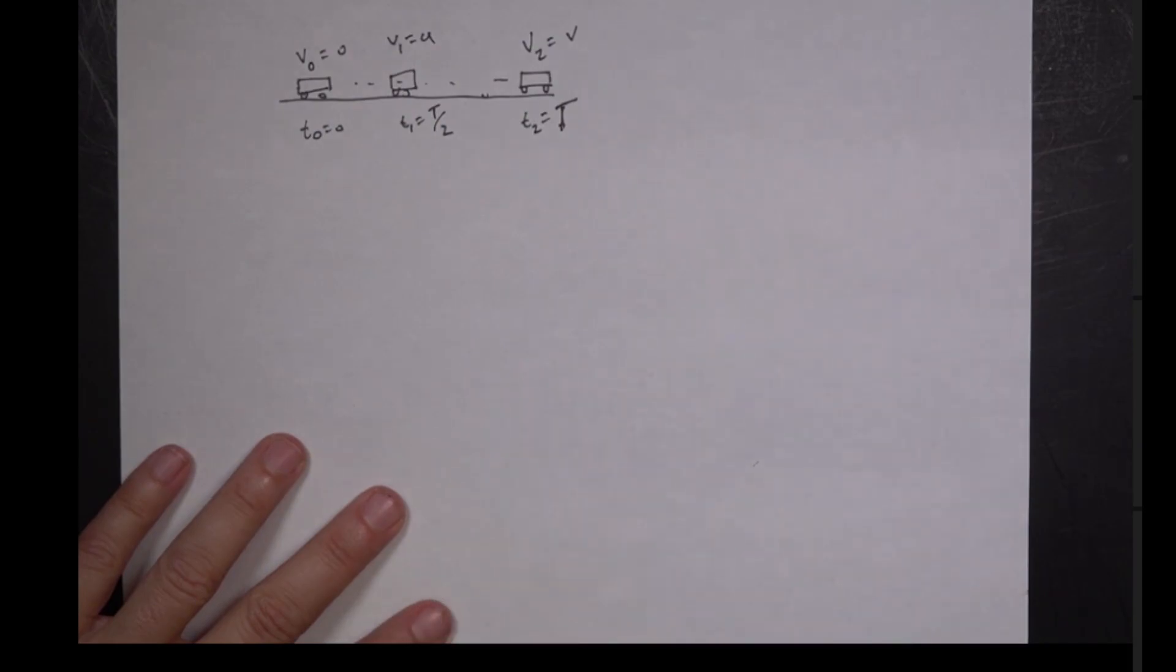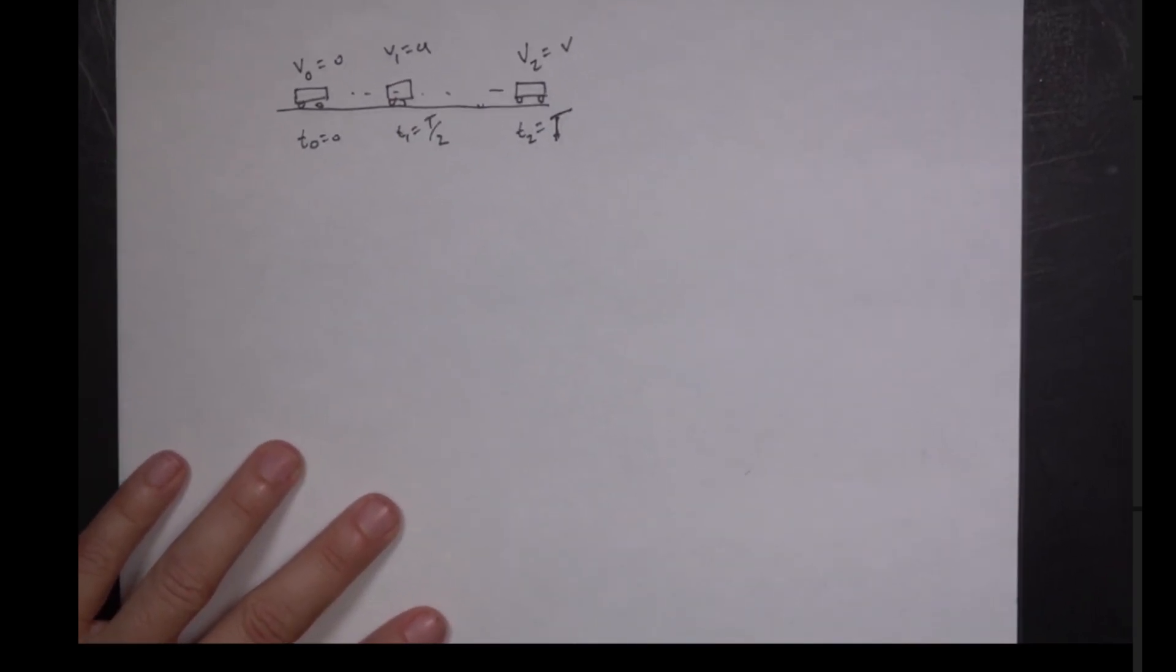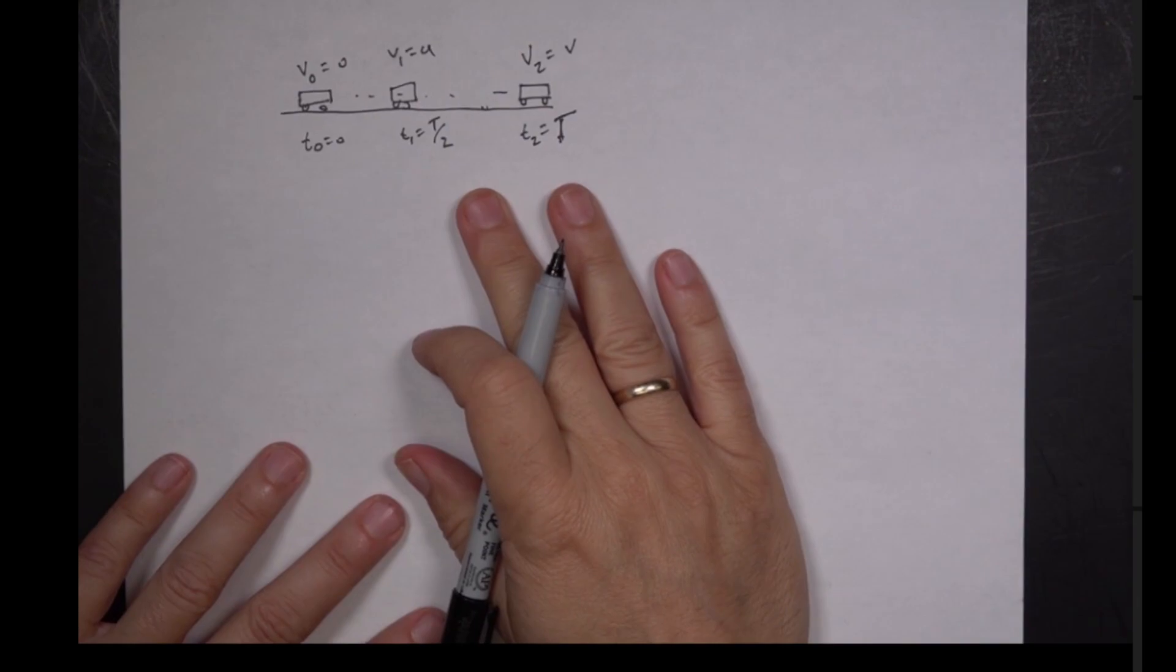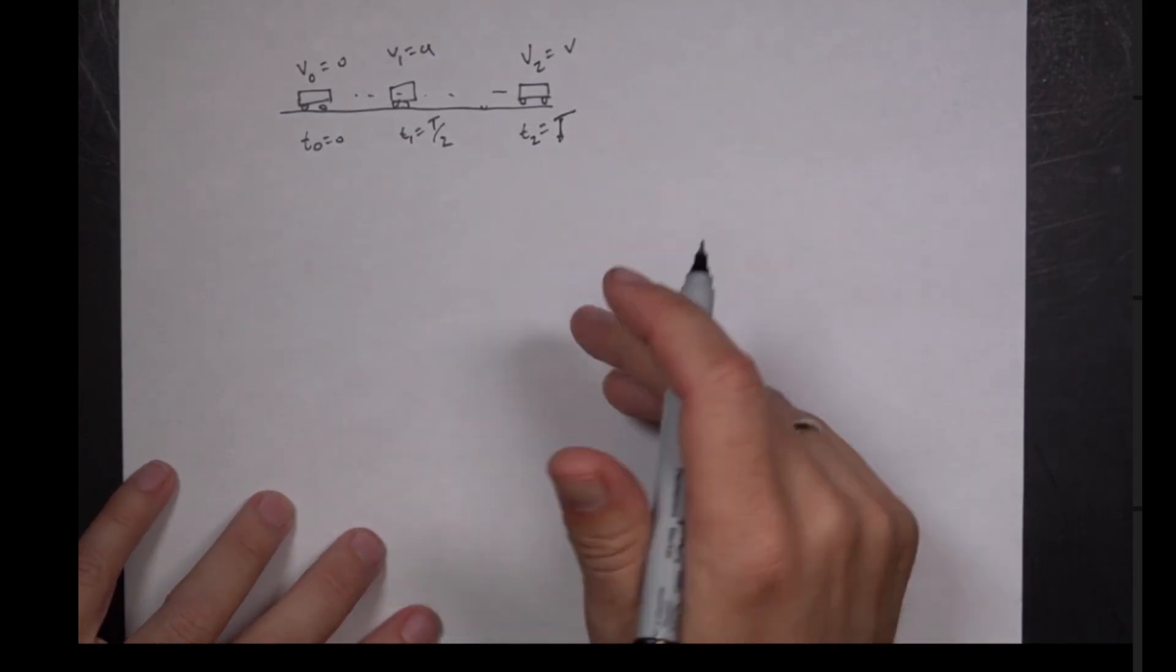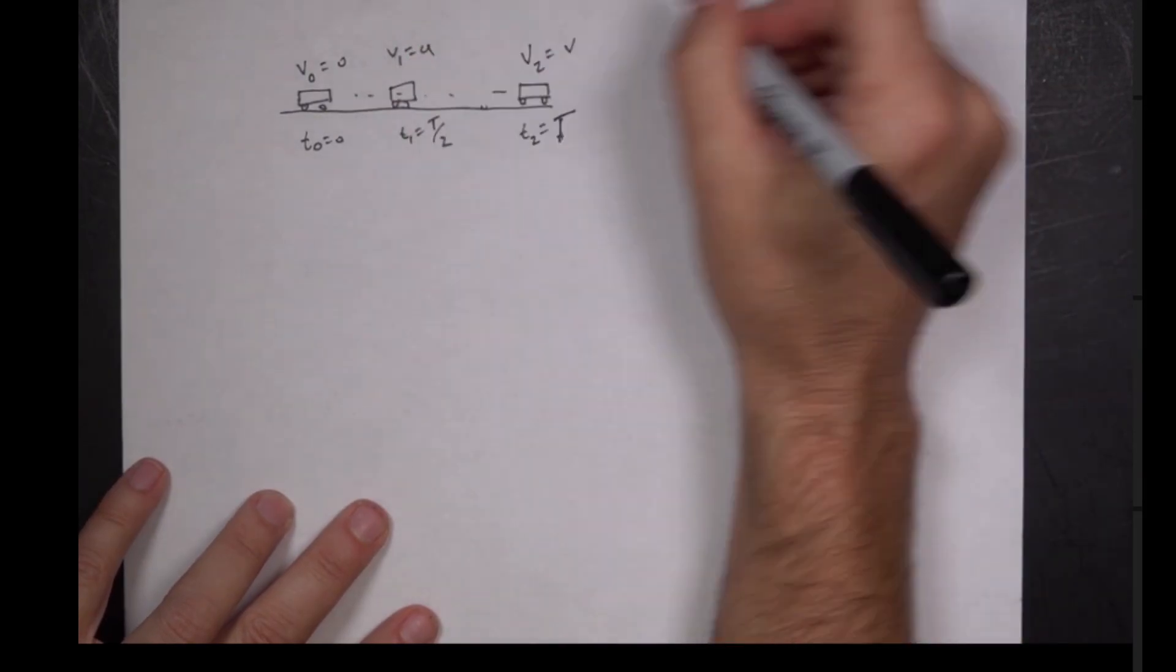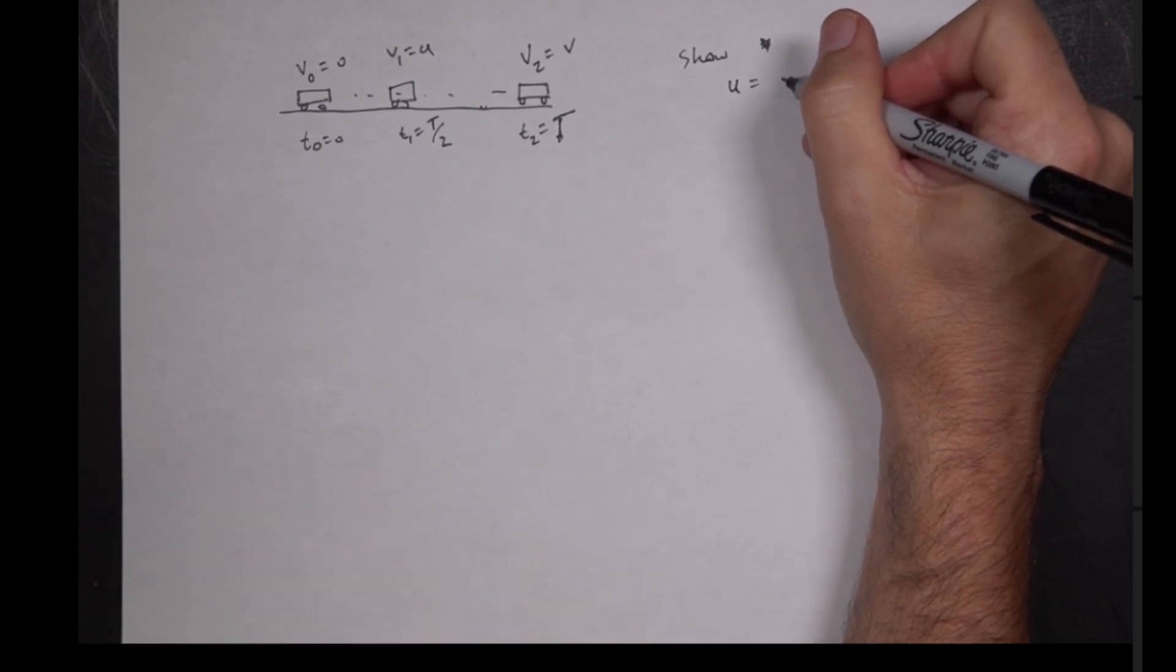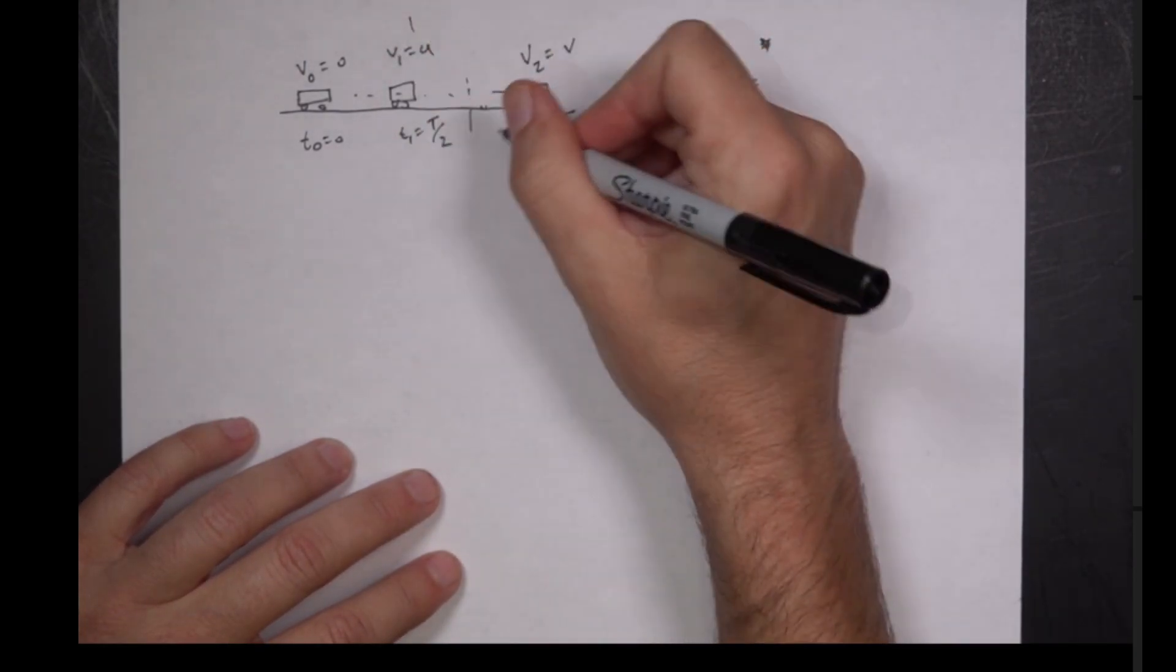So this is a time, this is at t0 equals 0, t2 equals t, they had a capital T. And this is t1 equals t over 2. Okay, so, ooh, that's out of focus. How to focus that. I told you I was new at everything, right? Focus. Is that focused? Now it's shaking. I guess it looks in focus if it wasn't shaking. Okay, I'm going to proceed.